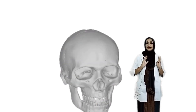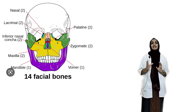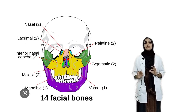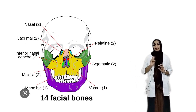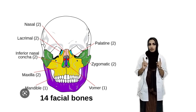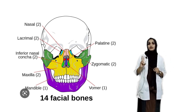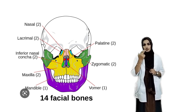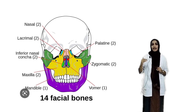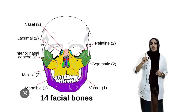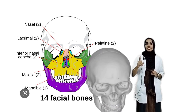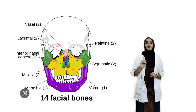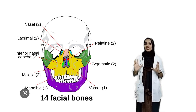Coming to the facial bones — facial bones include two nasal bones, two lacrimal bones, two zygomatic bones that form the cheekbone. Then maxilla, two in number, that are united before birth and form the upper jaw. One mandible bone forms the lower jaw and is the only movable bone in the skull. Then two palatine bones, one hyoid bone and one vomer bone. These are the facial bones.